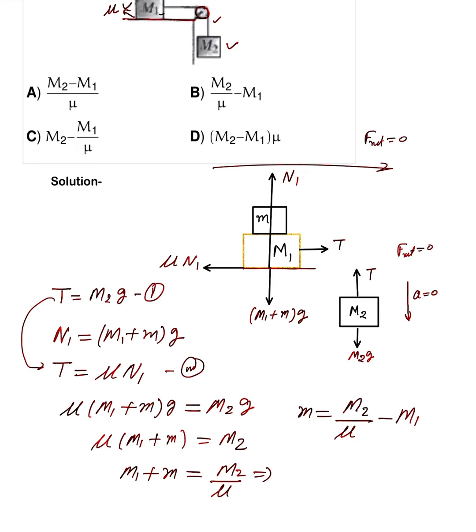Which one is the correct option? Option B is the correct option. If small m equals capital M2 by mu minus M1 is put on the capital M1 block, then the whole system does not accelerate.